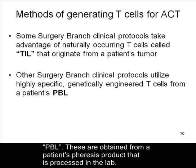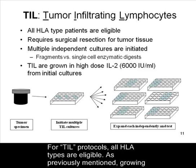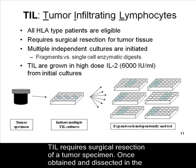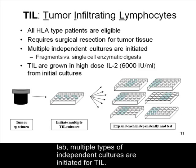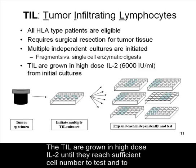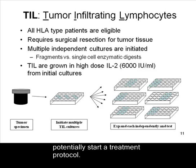For TIL protocols, all HLA types are eligible. Growing TIL requires surgical resection of a tumor specimen. Once obtained and dissected in the lab, multiple types of independent cultures are initiated for TIL. The TIL are grown in high-dose IL-2 until they reach sufficient cell number to test and to potentially start a treatment protocol.